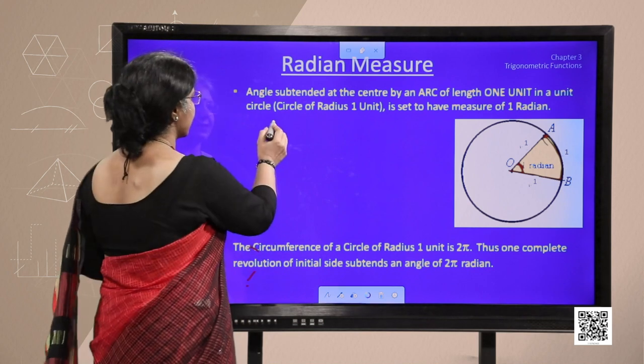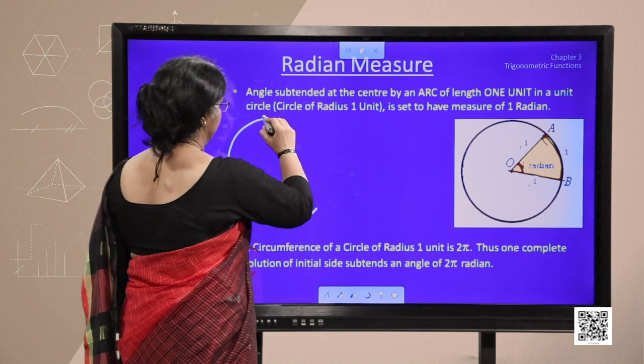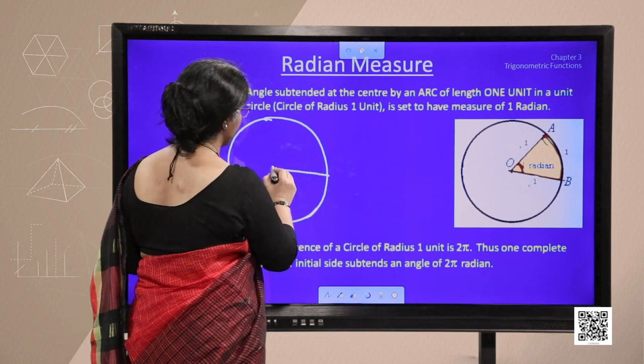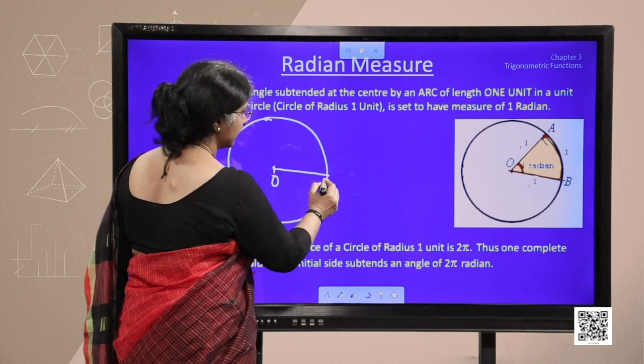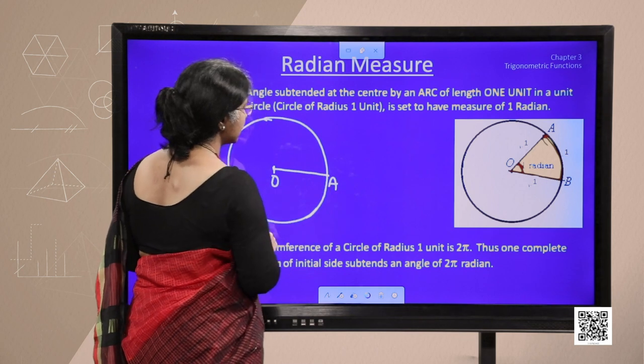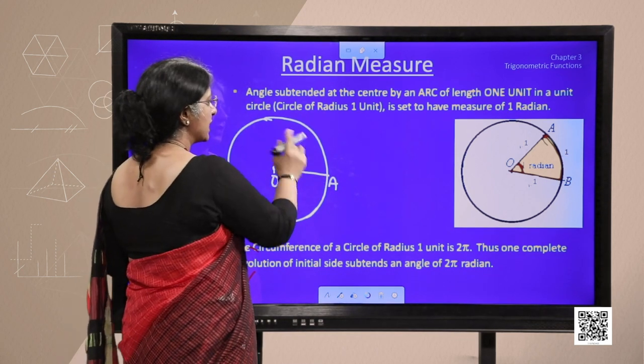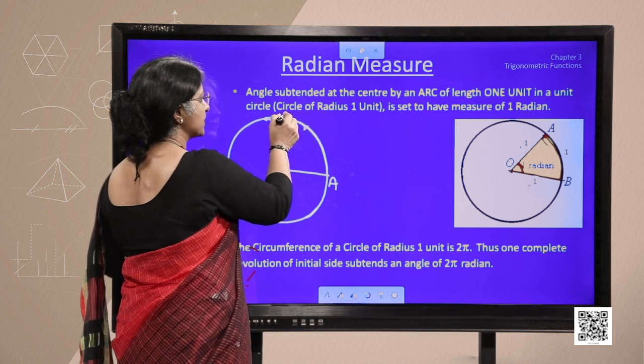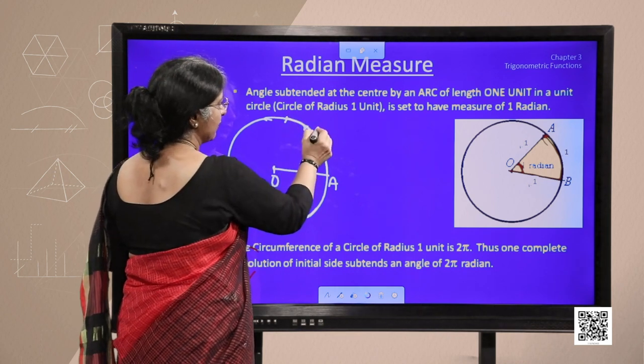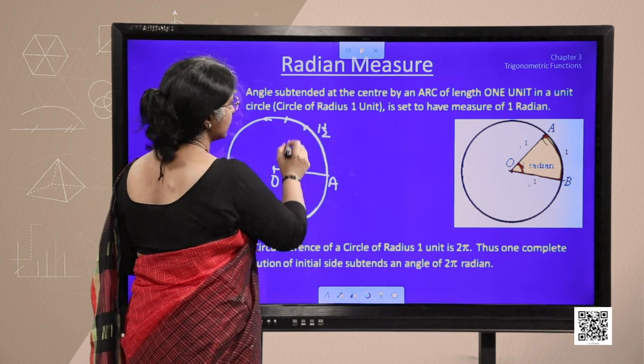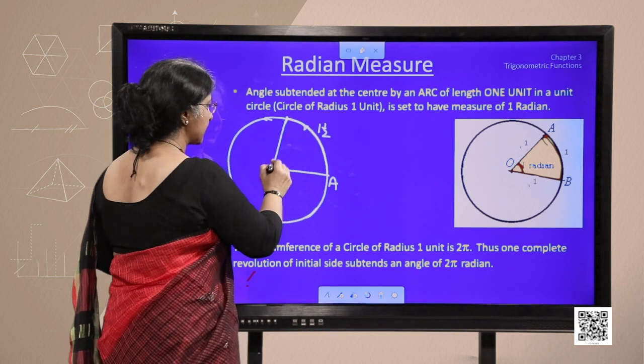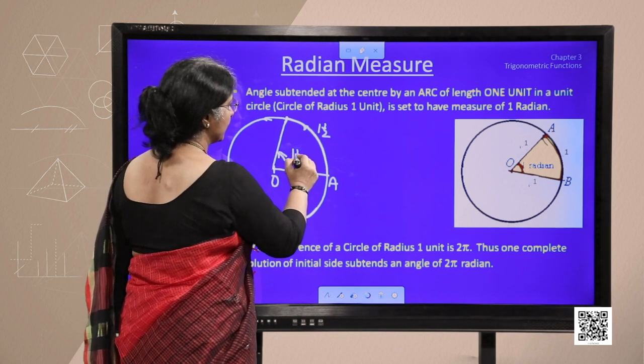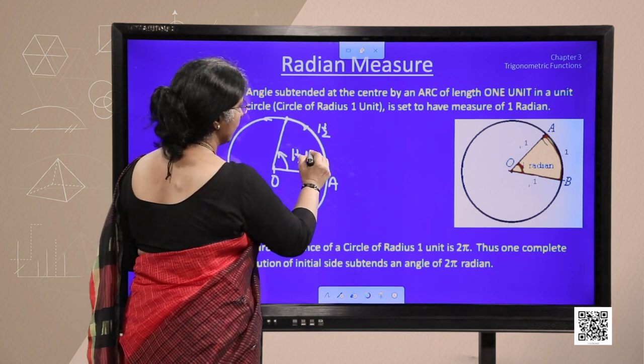Similarly, if we consider another circle with radius 1 unit, means unit circle, here centre is O and this is initial side and it moves and traces the length exactly 1 and half times of this radius. Then angle subtended at the centre is said to be 1.5 radian.